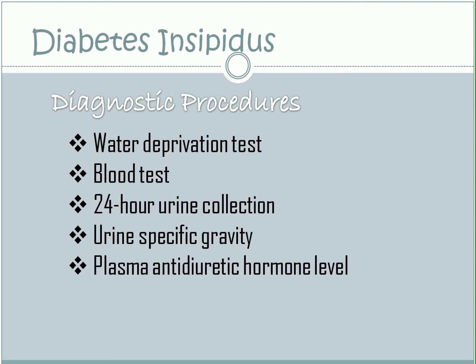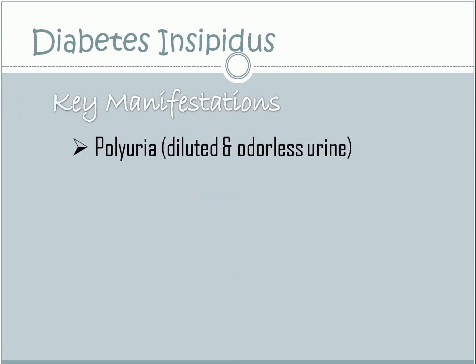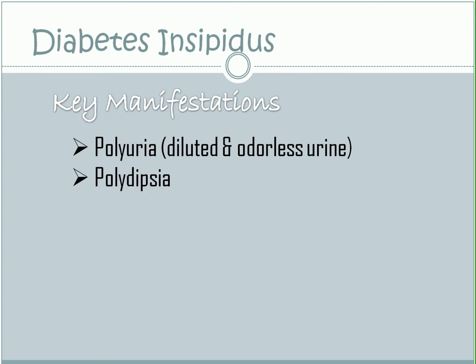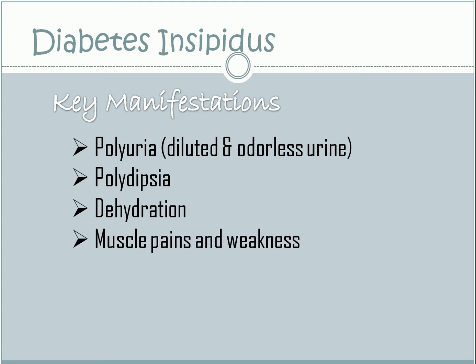Plasma antidiuretic hormone level is measured to determine the amount of antidiuretic hormone in the blood. Key manifestations include polyuria, polydipsia, dehydration, muscle pains and weakness, and hypernatremia.